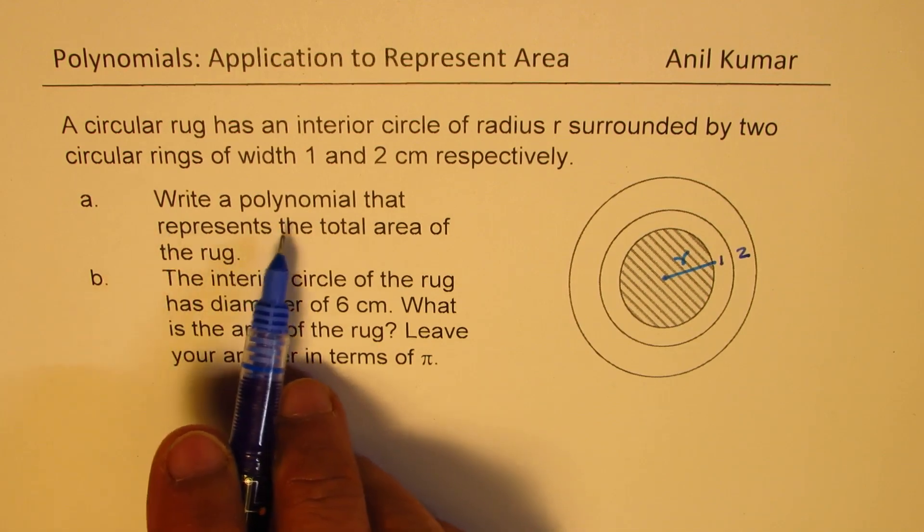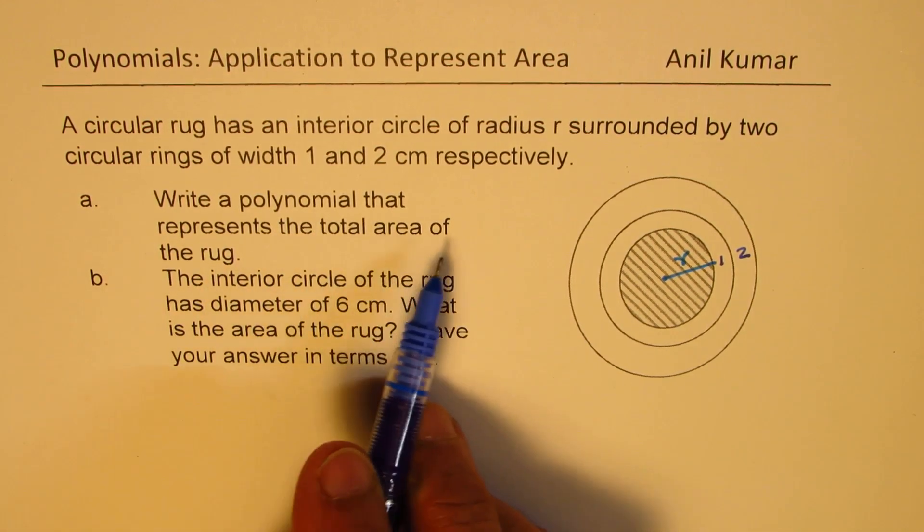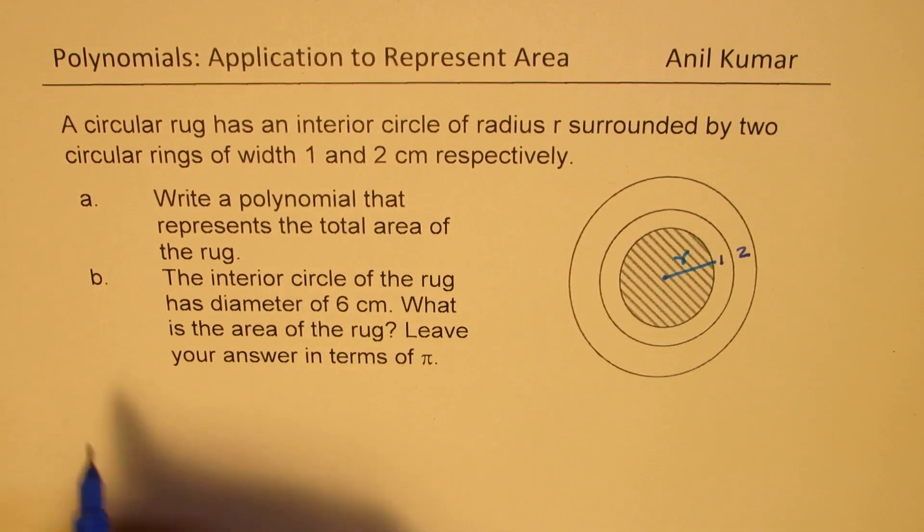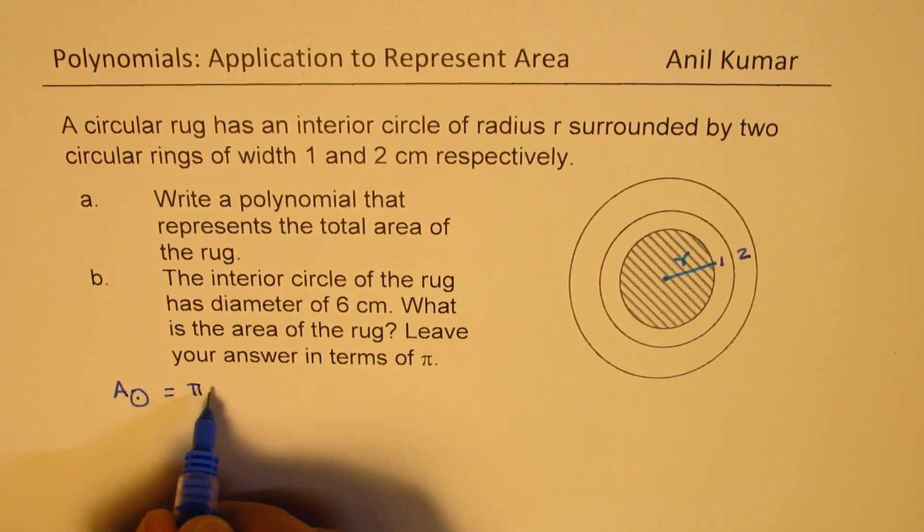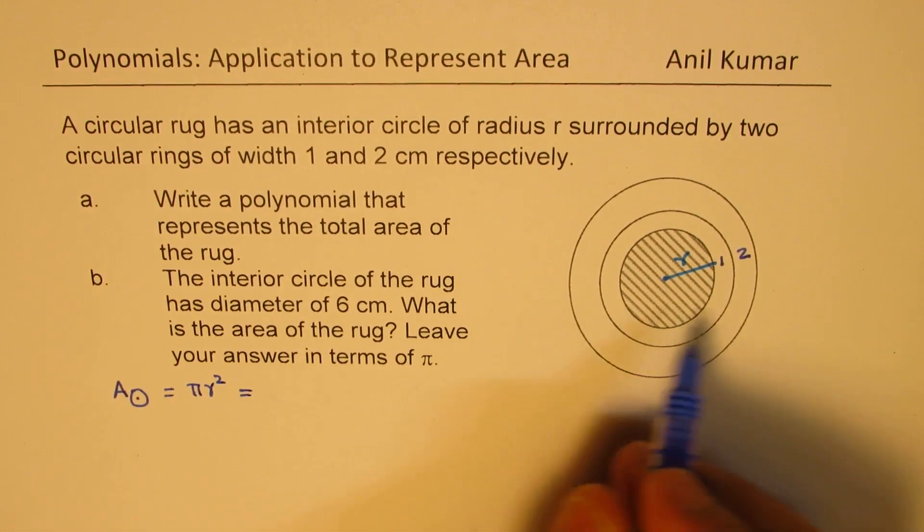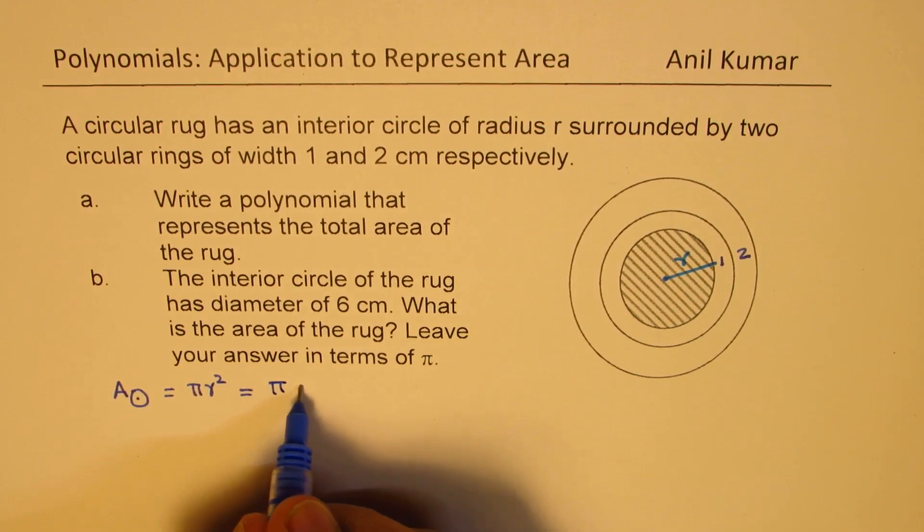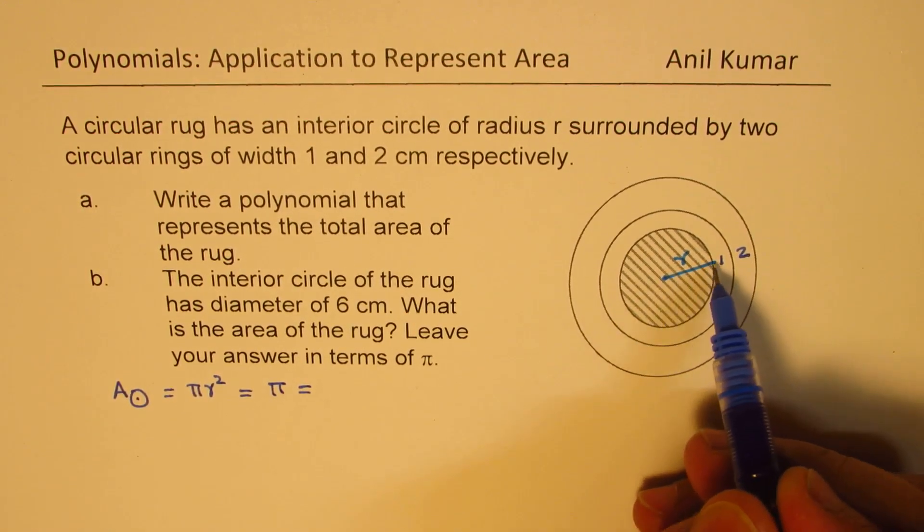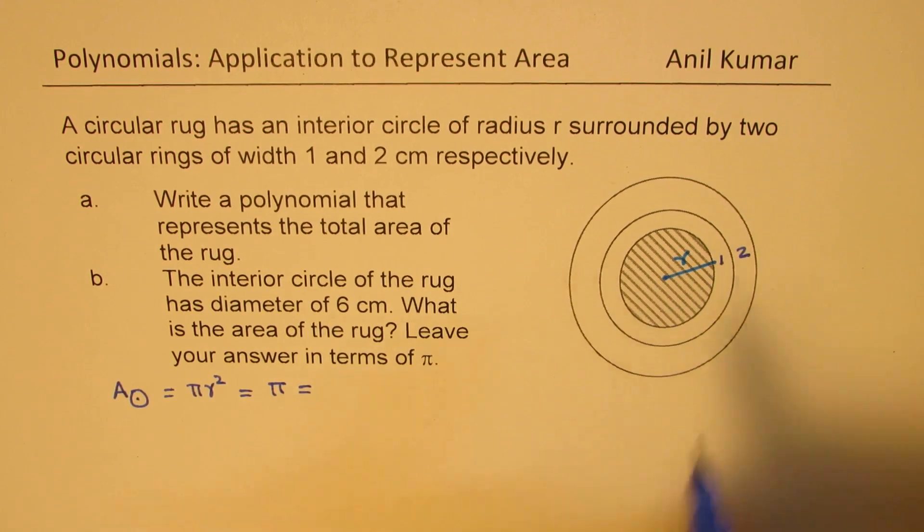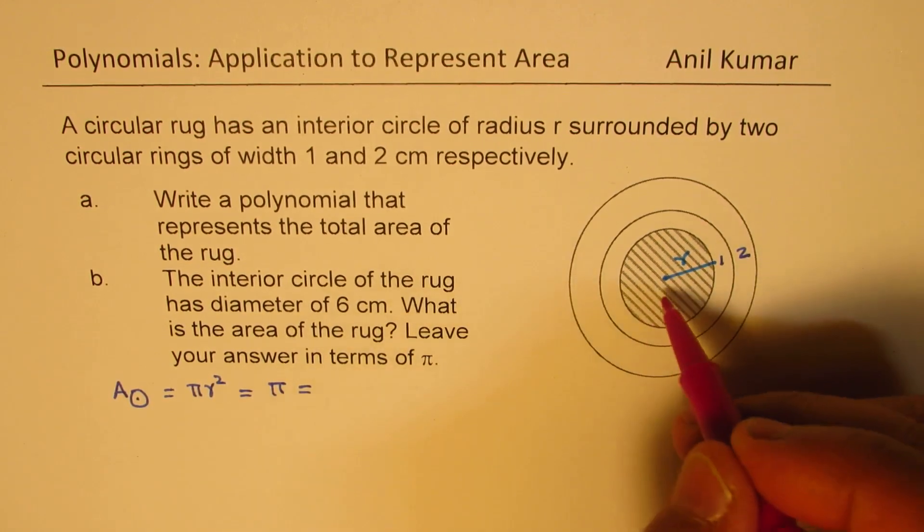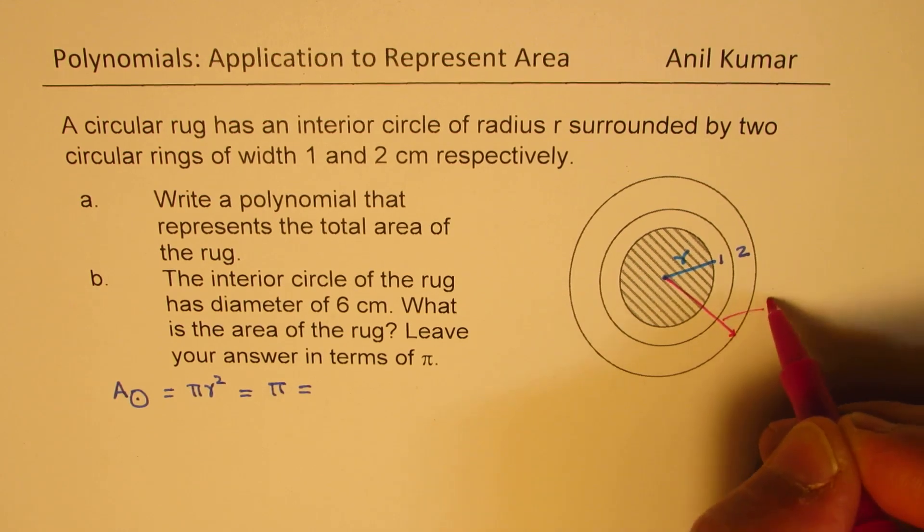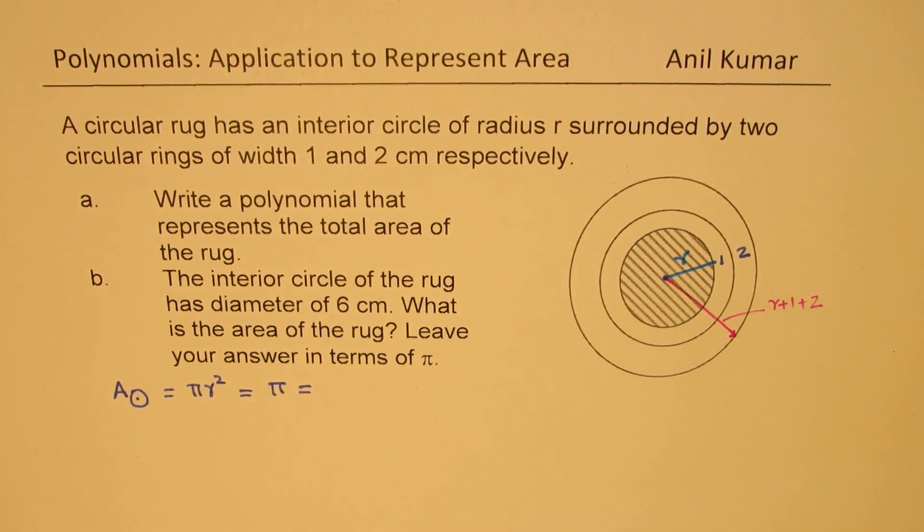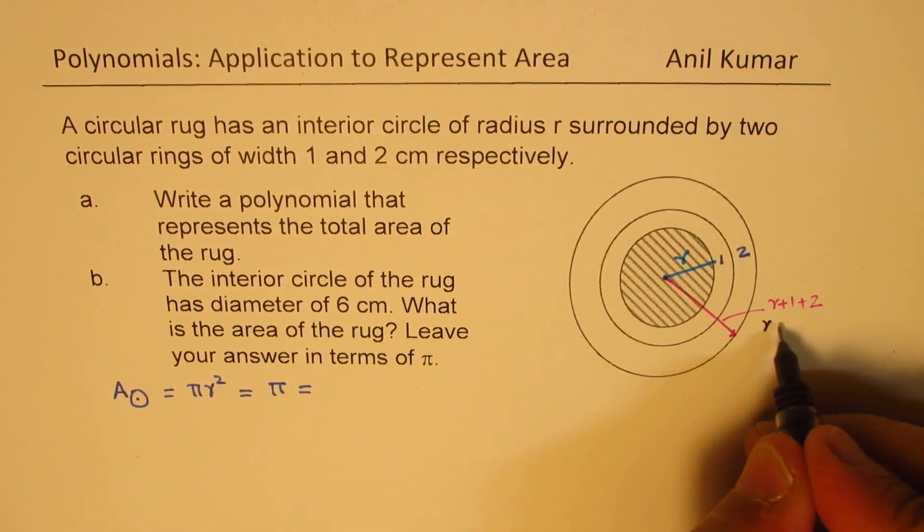Write a polynomial that represents total area of the rug. Now, area of a circle is πr². In our case, the radius will be this radius plus those two widths. So the net radius will be r plus 1 plus 2, which equals r plus 3.